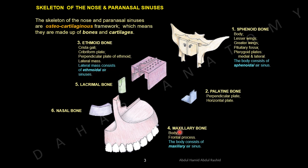Next is the maxillary bone — a huge bone. This is the body of the maxilla. There is a process called the frontal process of the maxilla, because it articulates with the frontal bone above — that is why it is called the frontal process of the maxillary bone. Inside the body of the maxilla is the maxillary air sinus.